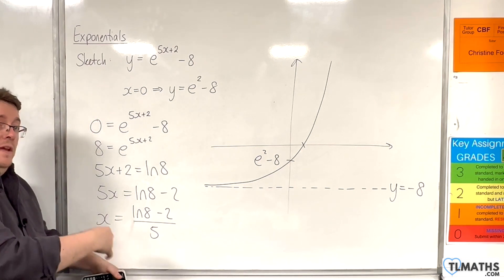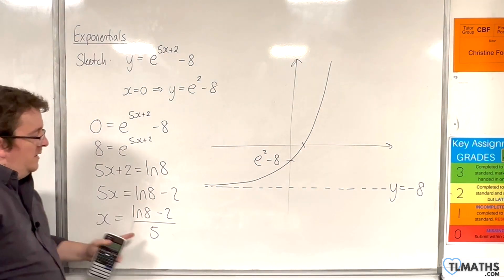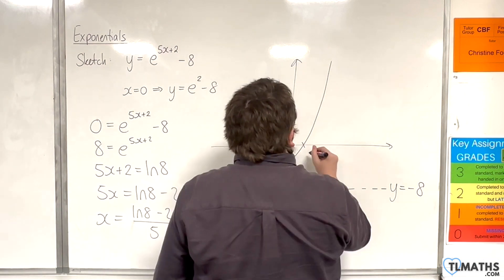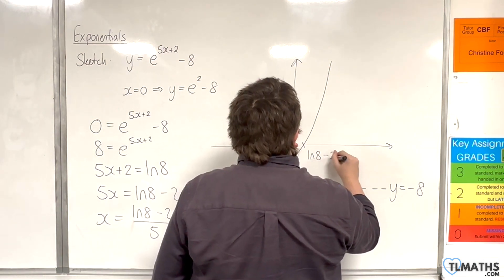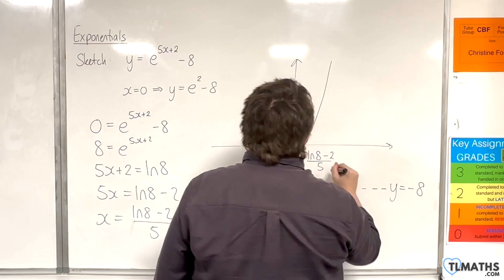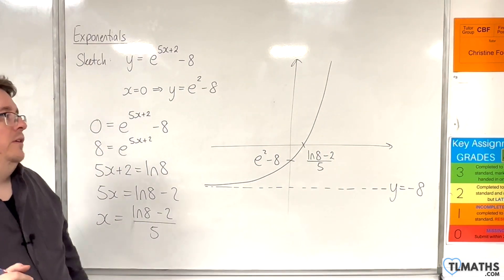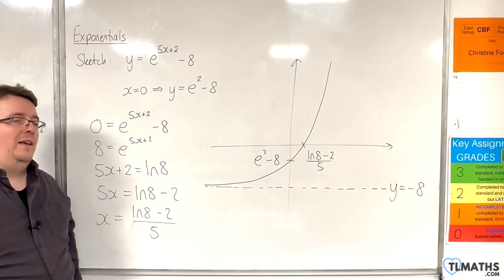Now, you could write that as 1 fifth of log 8, take away 2, but that's fine also. So ln of 8, take away 2 over 5. And that is the exact point where the curve crosses the x-axis.